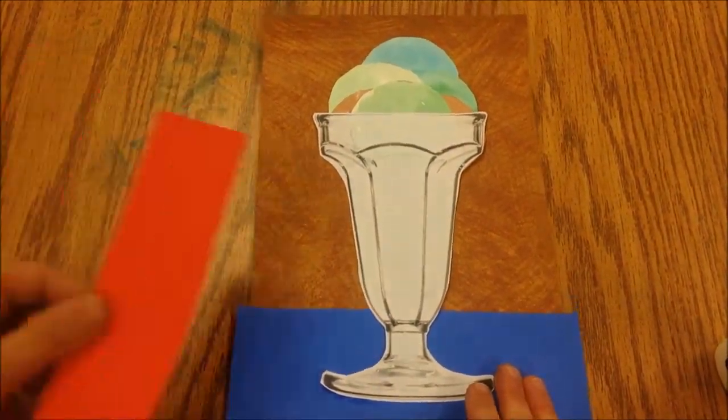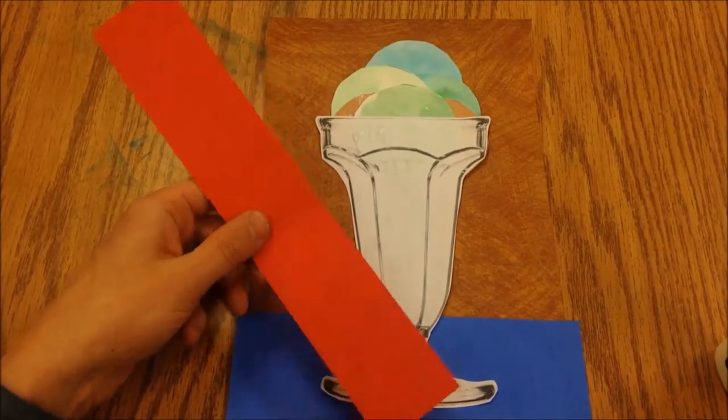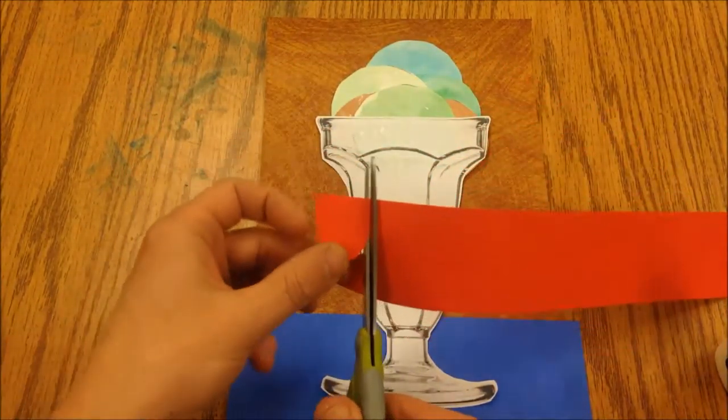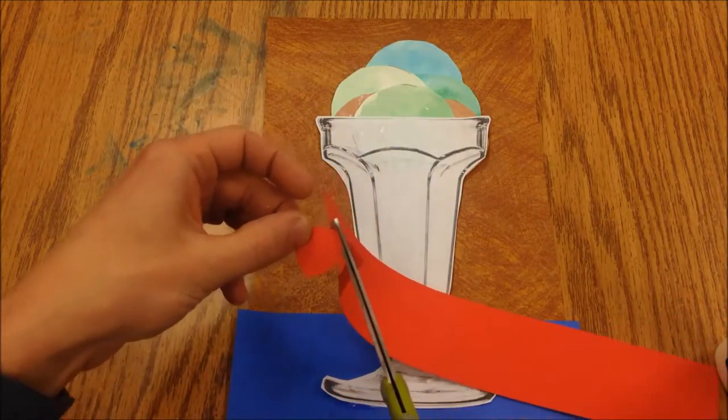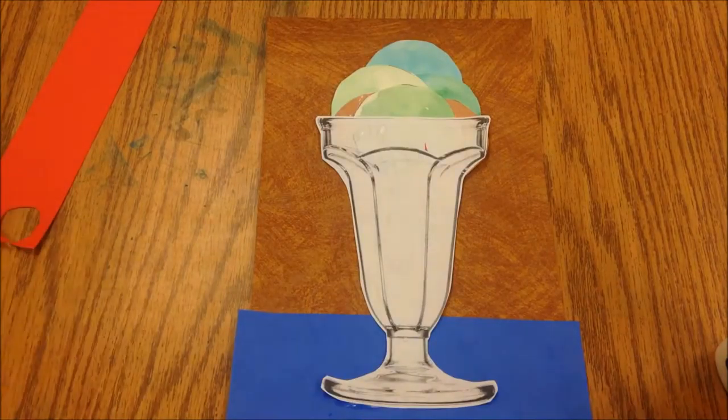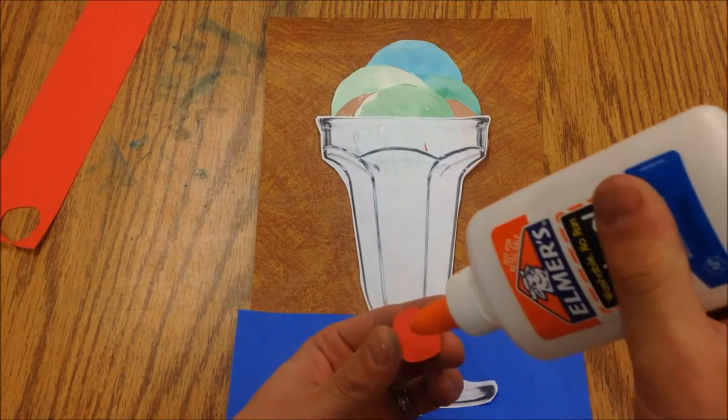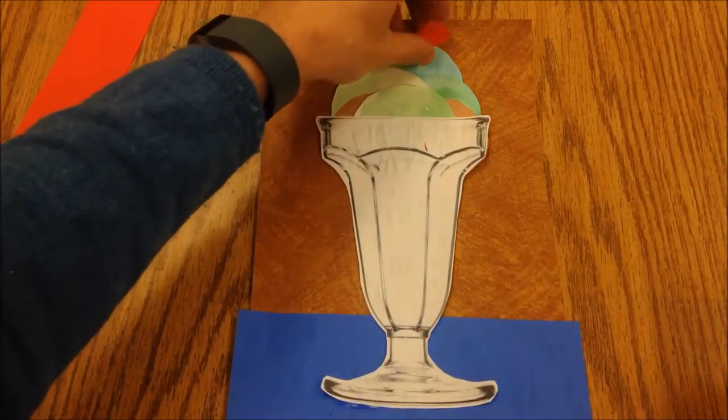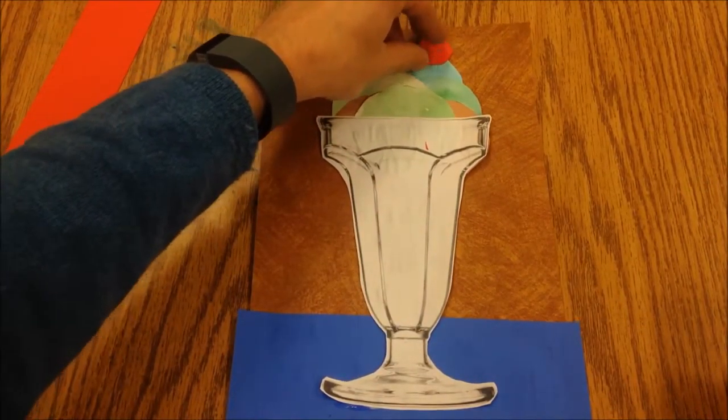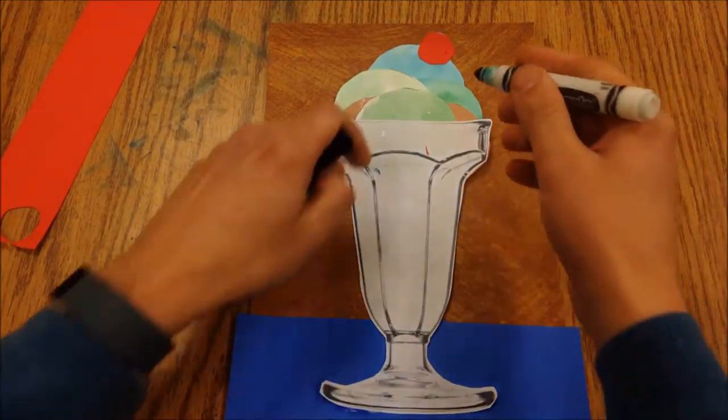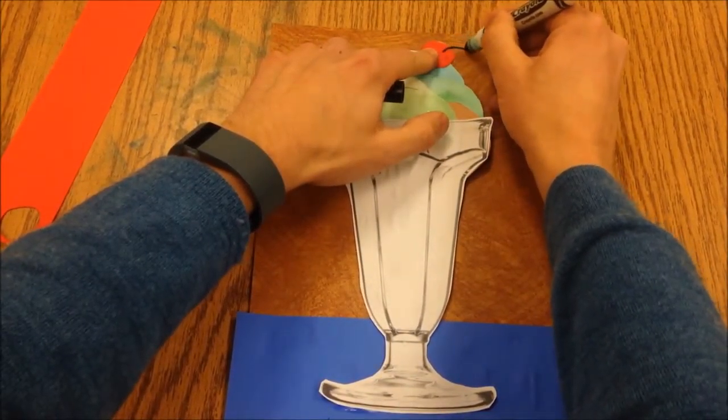Now I've got some scraps of paper and I'm gonna make a little cherry. So I'm just gonna kind of turn my paper and cut out a cherry. Put that here on the side.